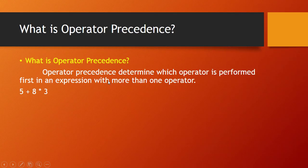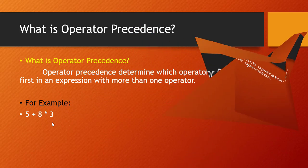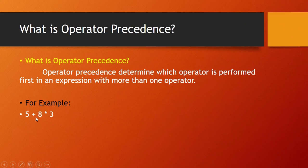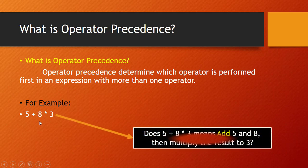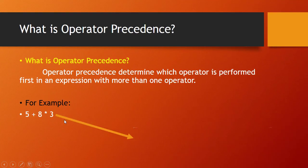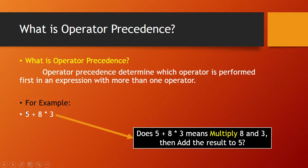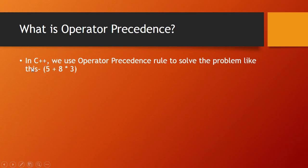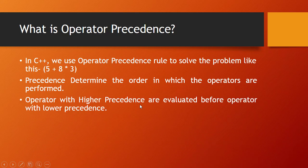Operator precedence determines which operator is performed first when you have more than one operator in an expression. For example, in the expression 5 plus 8 star 3, we have two operators. Does this mean we add 5 and 8 first, then multiply the result by 3? Or do we multiply 8 by 3 first, then add the result to 5? In C++, we use operator precedence rules to solve such problems, ranking operators by higher and lower precedence.